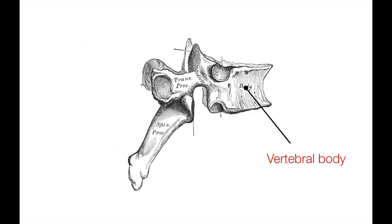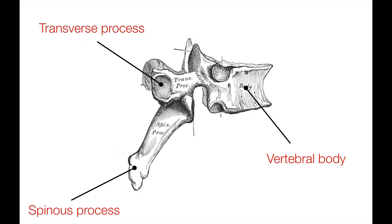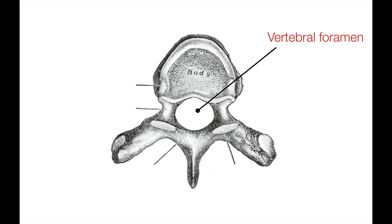The big round part at the front is called the vertebral body. The two bony prongs that stick out bilaterally are the transverse processes, and the bony prong sticking out posteriorly is called the spinous process — that's the part you're able to palpate when doing a spinal examination. The circular hole in the middle of the bone is called the vertebral foramen, and this is the part that transmits the spinal cord.